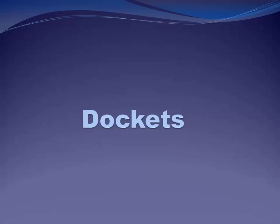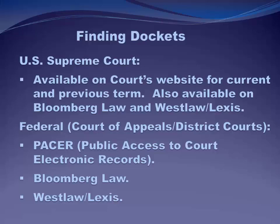So where do you find dockets? You can find docket sheets in a bunch of different places and a wide variety of databases. Bloomberg Law has by far the most useful and deepest docket collection. Bloomberg provides not only the docket sheet — the listing of documents — but for many cases also allows you to access and download copies of the documents listed in the docket sheet. You can also access U.S. Supreme Court dockets from the Supreme Court website. For Court of Appeals and District Court cases at the federal level, federal courts publish docket information on PACER, and these dockets are also available on Bloomberg Law. You can access some Supreme Court and lower federal court dockets on Westlaw and Lexis, but coverage is definitely not as good as Bloomberg Law or PACER.